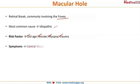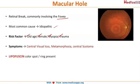The patient presents with central visual loss, metamorphopsia, and a central scotoma. On examining the fundus, you will see a yellow-colored ring over the fovea.